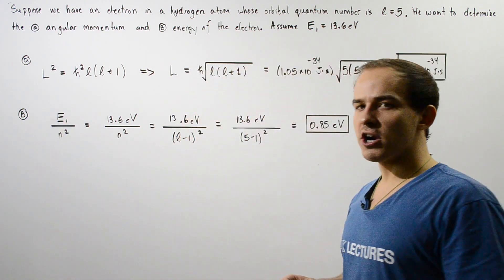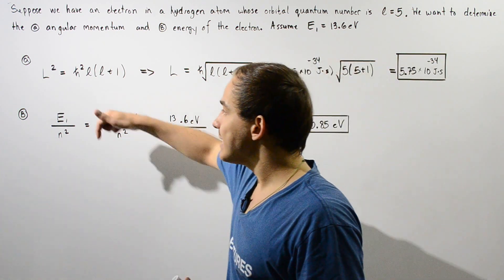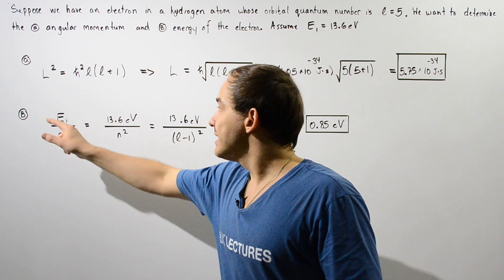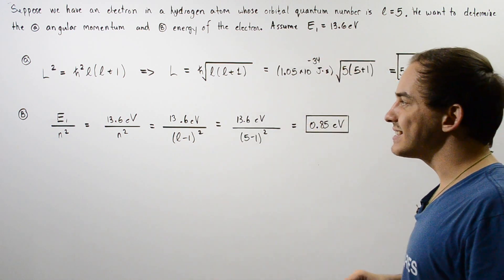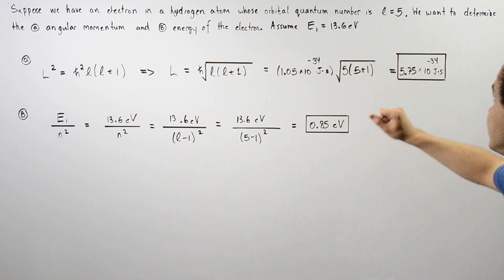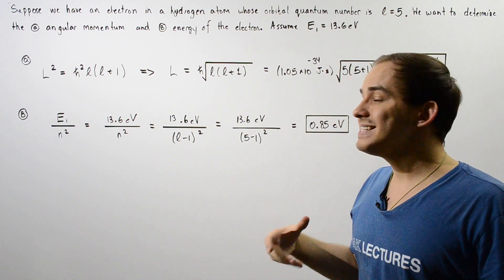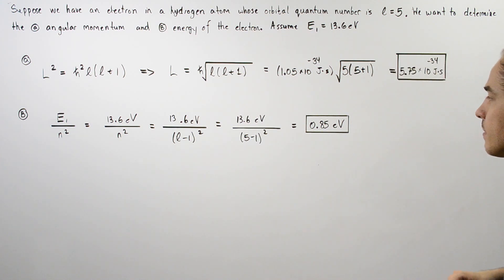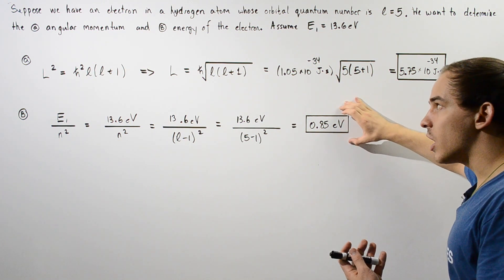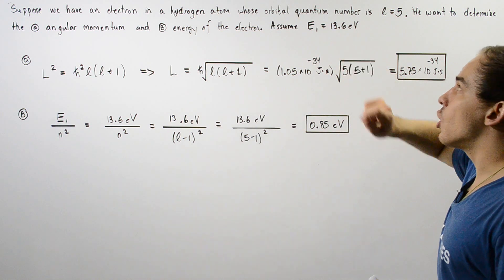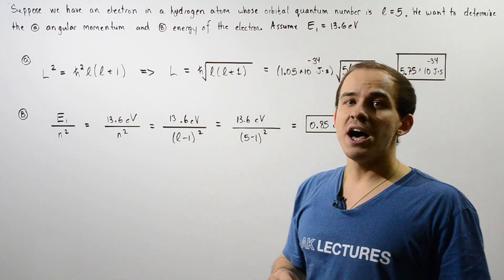Now for part B, to calculate the energy we take E1 divided by N squared. E1 is equal to 13.6 electron volts and N is equal to L plus 1, so with L equal to 5, N equals 6 — wait, here N is taken as L minus 1 equals 4. So we have 13.6 electron volts divided by 16, which gives us about 0.85 electron volts. This is the energy of our electron and 5.75 times 10 to the negative 34 joule-seconds is the angular momentum, when the electron is in orbital quantum number L equals 5 inside the hydrogen atom.